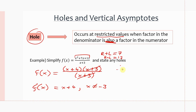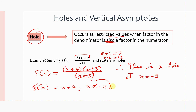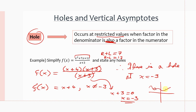Therefore, there is a hole at x = −3. Because if we take the factor (x + 3) and set it equal to zero, subtracting 3 from both sides gives x = −3. So at x = −3 in the graph, there will be a hole — an open circle — indicating no value exists there.